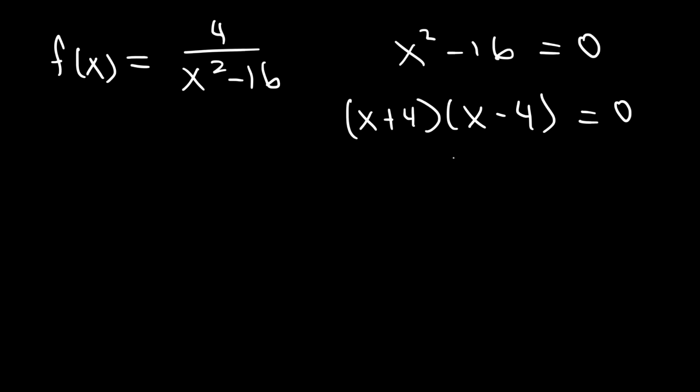So in this problem there are two vertical asymptotes. The first one: x is equal to negative 4. And the second one: x is equal to positive 4.